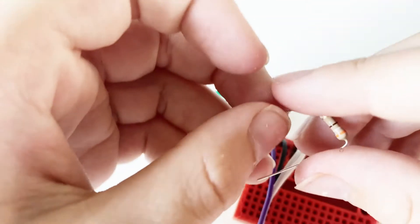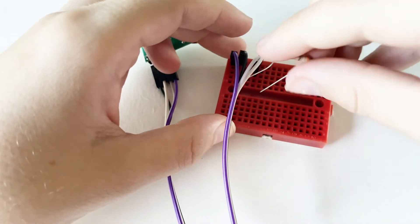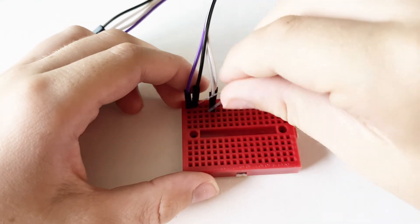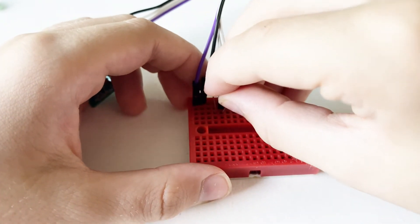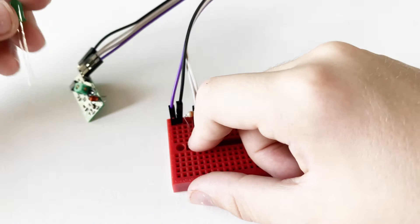Now we can get the resistor and put one end in the same row of holes as the other two wires there and the other in the row of holes next to it.